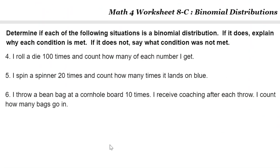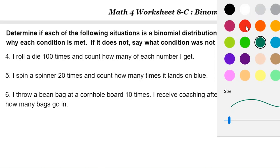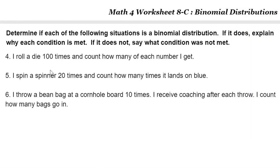If you roll a die 100 times and count how many of each number you get — there are six ways that could happen. This is not a case of yes or no. That is where it breaks the rule: more than two outcomes means it does not qualify as a binomial distribution.